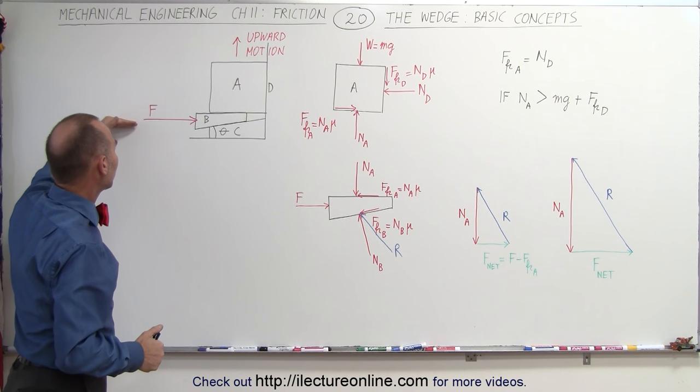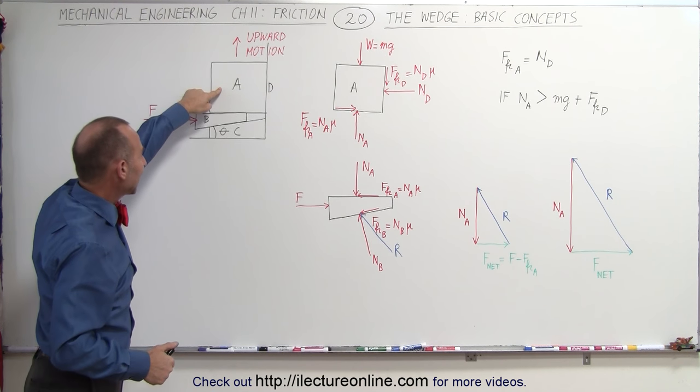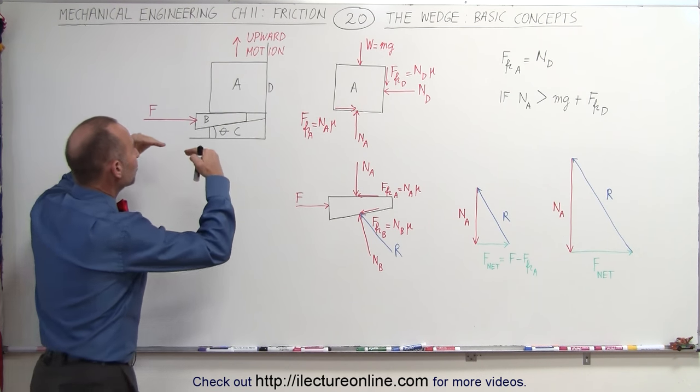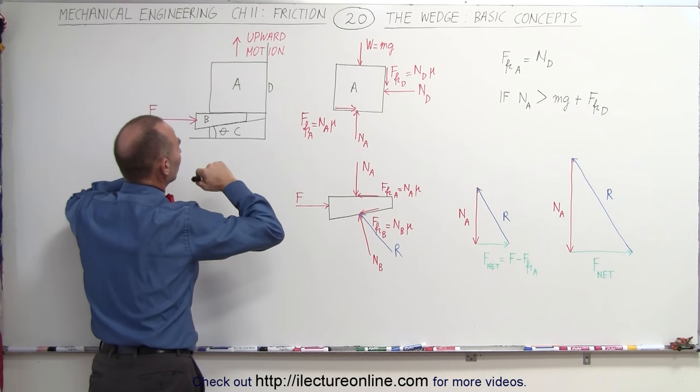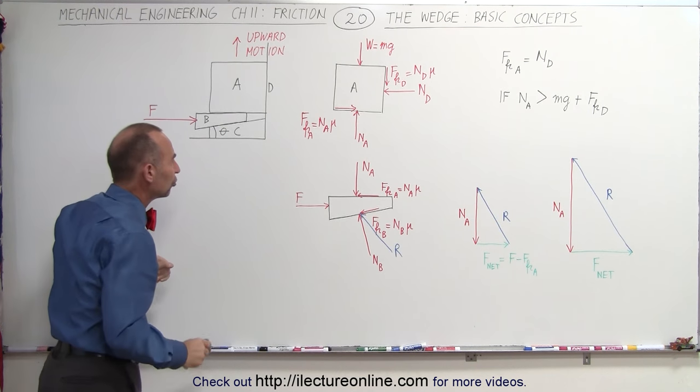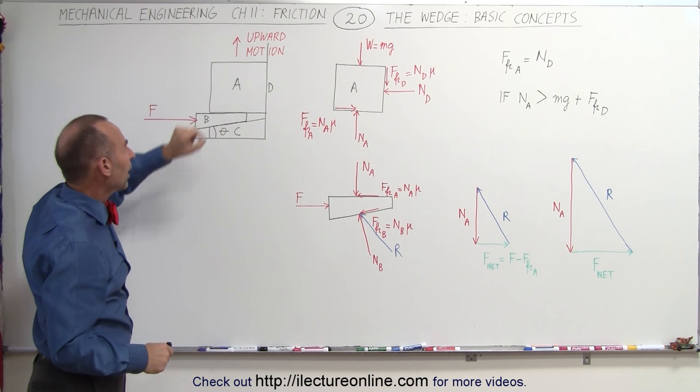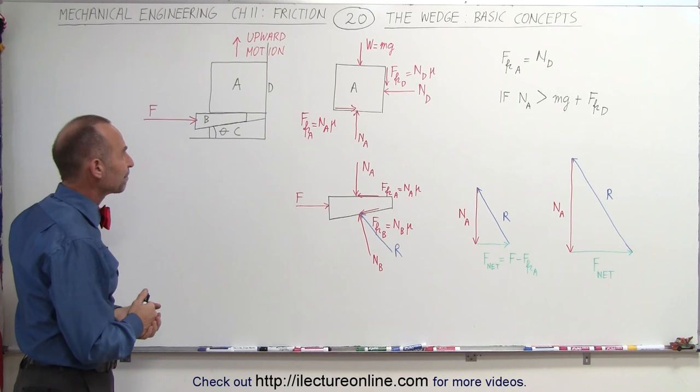So what's happening here is as we drive using a force, a wedge in between the object A and the object C, object A will go upwards. So we're trying to get an upward motion on A by driving in this wedge. The question is, how much force is it required to lift up an object like object A?